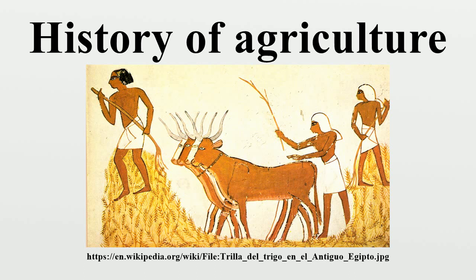Independent development of agriculture occurred in northern and southern China, Africa's Sahel, New Guinea, parts of India, and several regions of the Americas.